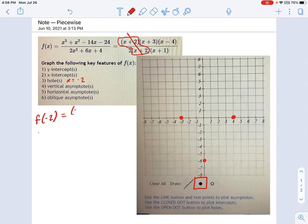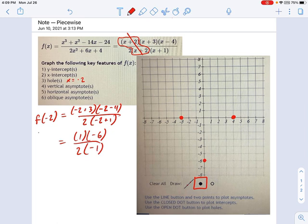So we would say negative 2 plus 3 and negative 2 minus 4, divided by 2 times negative 2 plus 1. Just work that through. This is going to be 1 times negative 6 divided by 2, divided by negative 1, which is negative 6 over negative 2, which is 3. So the location of this hole is at negative 2 comma 3.